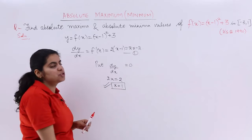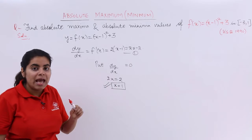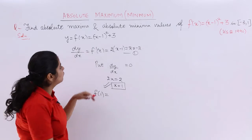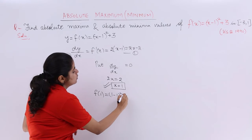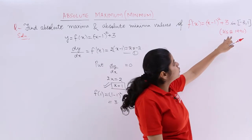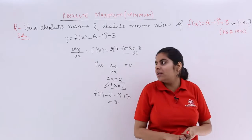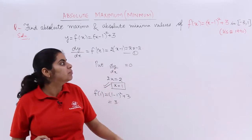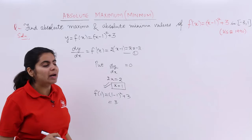Now, one value that you have got is 1, and you are not only about to check for f of 1. Where is f of 1? It is (1-1)² + 3, which is 3, but also for the boundary values. Boundary values are -3 and 1, out of which 1 has already been included. So our task has become very simple. We are only supposed to check for -3.